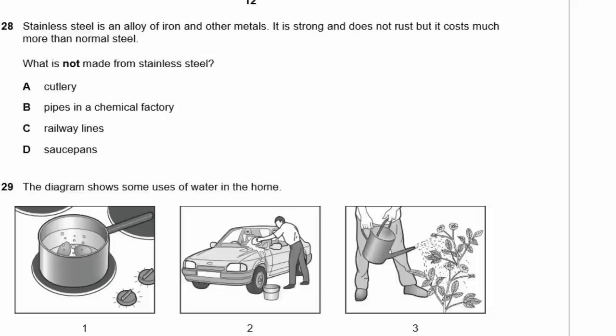Question 28. Stainless steel is an alloy of iron and other metals — strong, doesn't rust, but much more expensive than normal steel. What is NOT made from stainless steel? Cutlery — yes, stainless steel. Pipes in a chemical factory — yes, they need non-reactive, durable pipes. Railway lines — no, that would be extraordinarily expensive over such long distances. Saucepans — yes, stainless steel saucepans are common. The answer is C — railway lines.